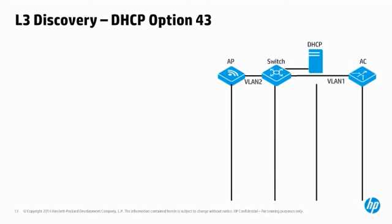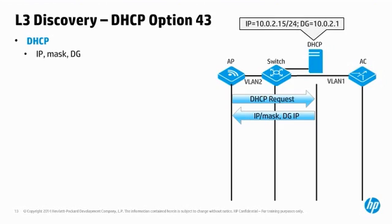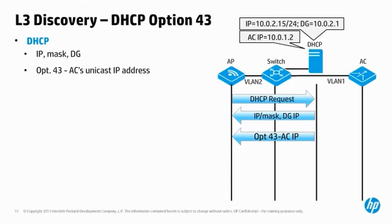DHCP servers can be configured with several advanced options, one of which is option 43. This option can supply the IP address of some server or other resource necessary for endpoint operation. For example, many Voice over IP or VoIP phones are placed in a VLAN with a DHCP scope configured with option 43. This option provides the phone with the IP address of some VoIP control server. Access points can also be placed on a VLAN with a DHCP scope configured with option 43. The AP gets its IP address, mask, and default gateway as normal, and additionally uses option 43 to learn the unicast IP address of the AC.